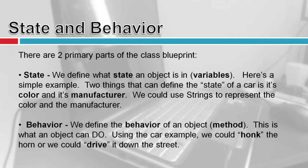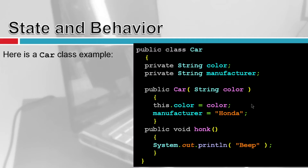The second thing about objects is what they do. Objects are really useless unless they can do something. We define the behavior through methods — the functions that are in the class. Using the car example, we could honk the horn or drive it down the street.